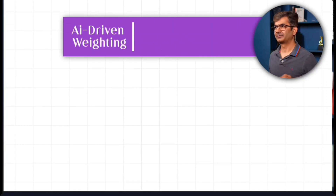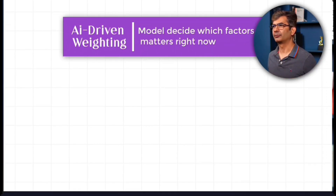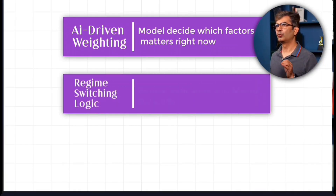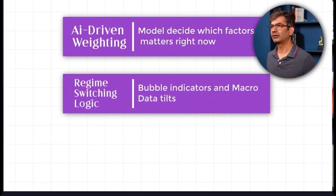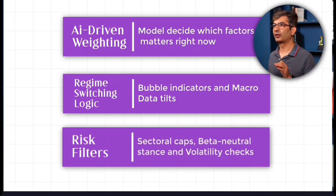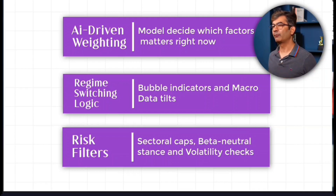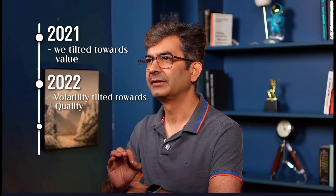At Intel Invest, we add one more step: AI-driven weighting. The model decides which factors matter right now. Regime-switching logic includes a bubble indicator and macro data tilts. We also apply risk filters and sectoral caps, beta-neutral stance, and volatility checks. We have a strategy called Gold S25 which has all of this implemented. In the 2021 recovery we tilted towards value; in the 2022 volatility we tilted towards quality; in the 2023 bull run we went momentum-heavy. The result was a smoother return, lower drawdown, and smart rotation.